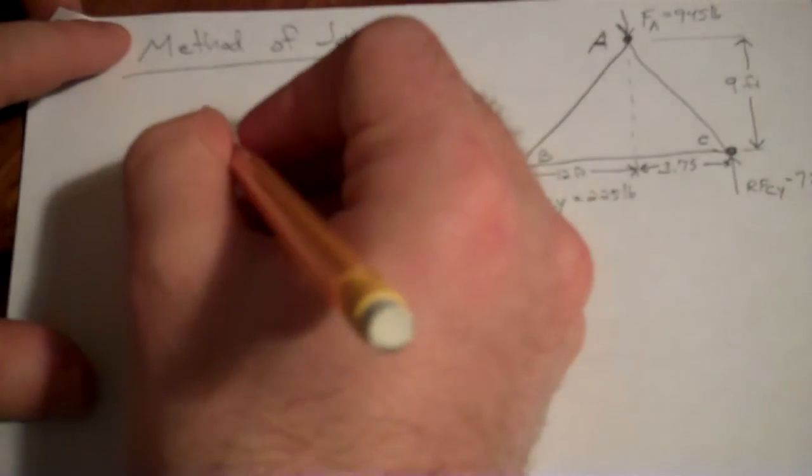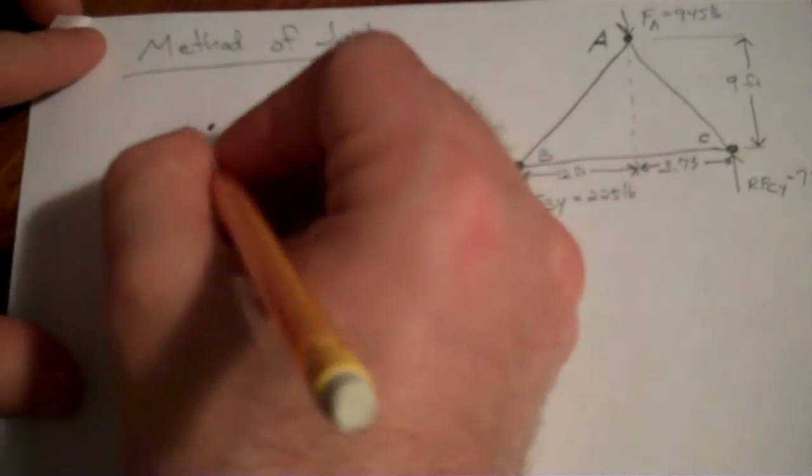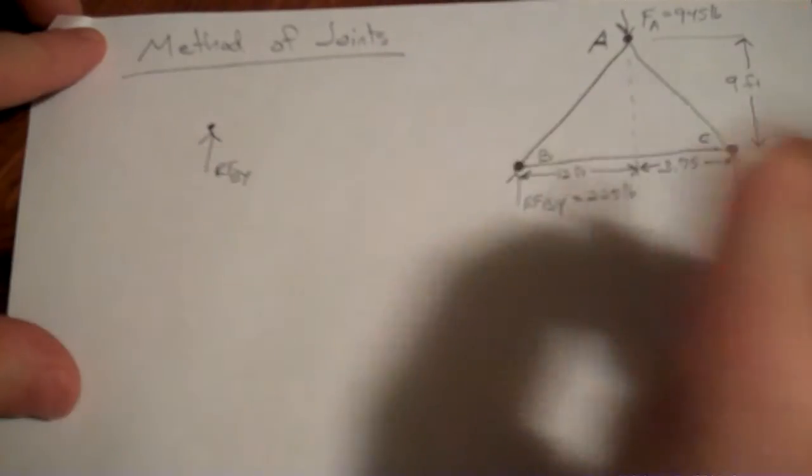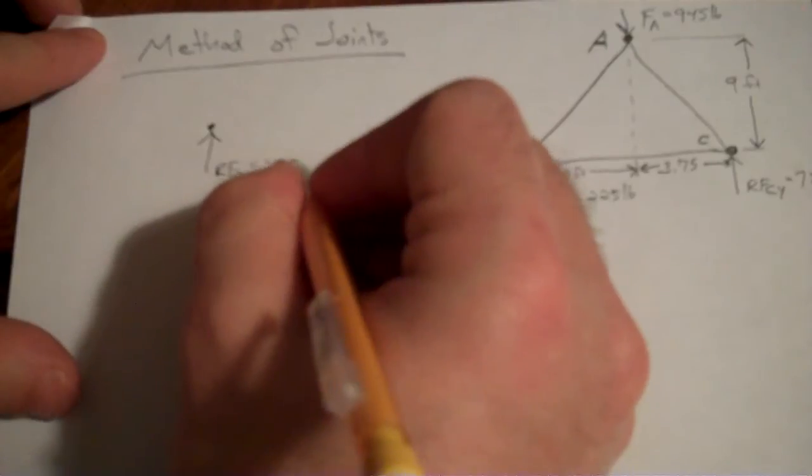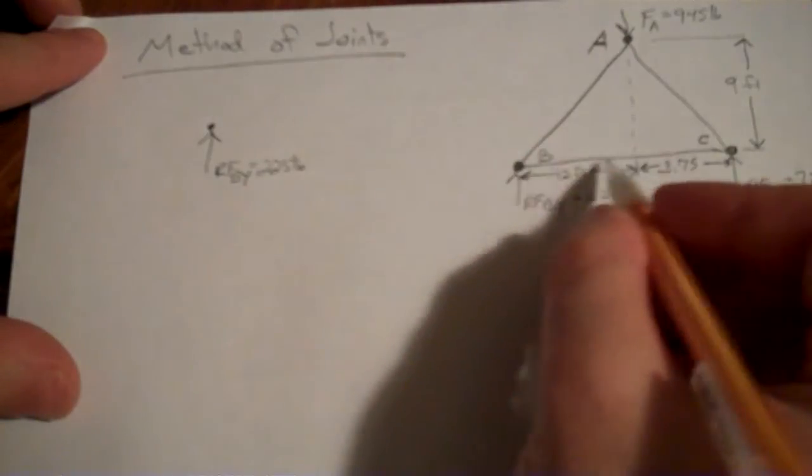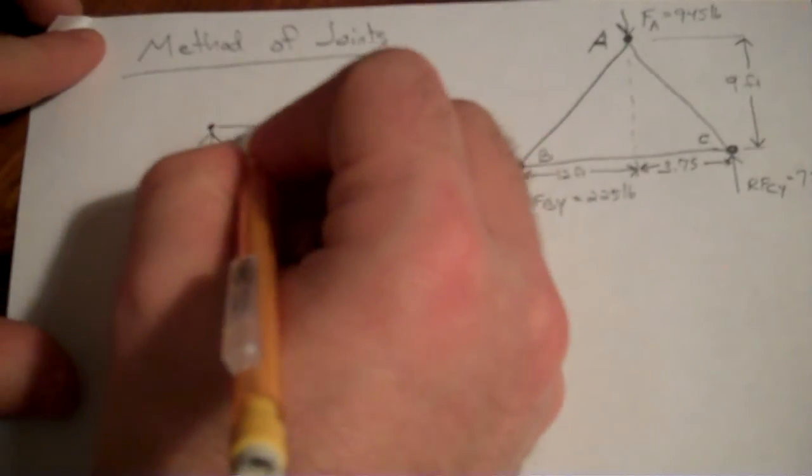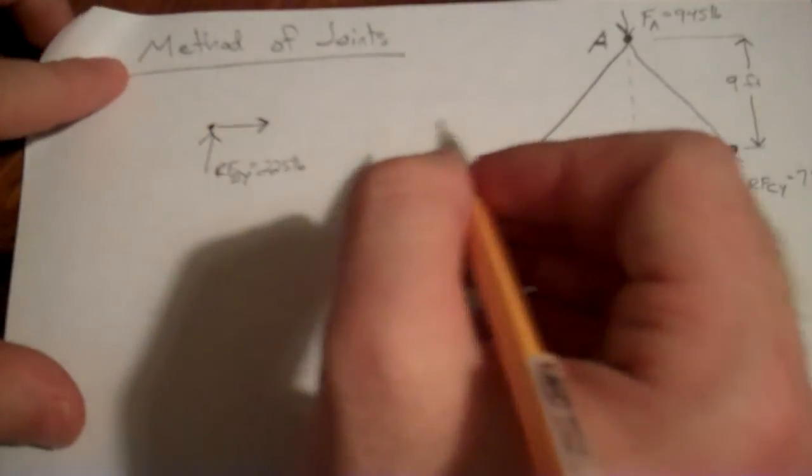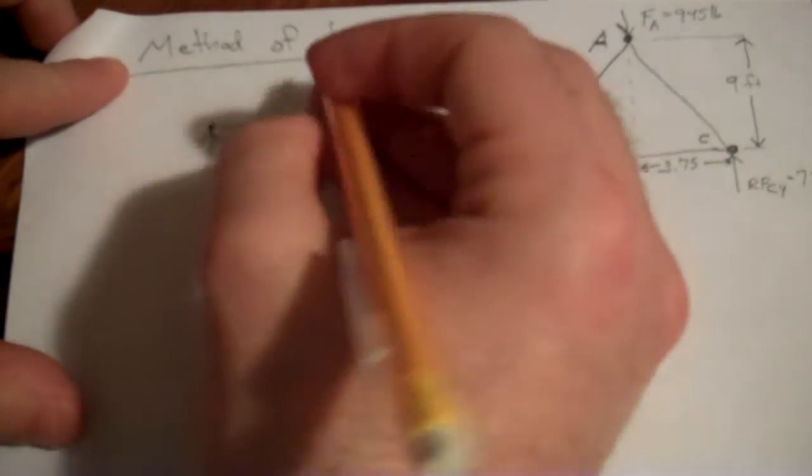So let's look at joint B. We have RFBY pushing upwards, we have a value for that of 225 pounds. We have FBC connected this way. Now I'm going to assume that it's actually pulling on this joint, which would mean the member is actually in tension if it's pulling on the joint.